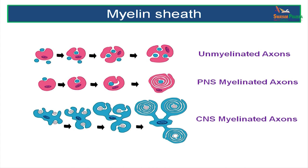At a glance you can see the three different types of processes. The first is an unmyelinated axon with no myelin sheath. The second shows the process of myelination in the peripheral nervous system. The last shows the process of myelination in the central nervous system.